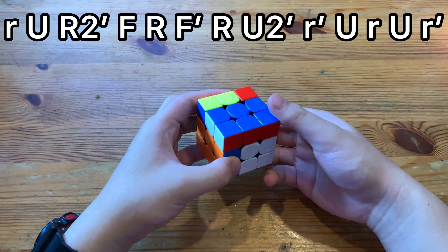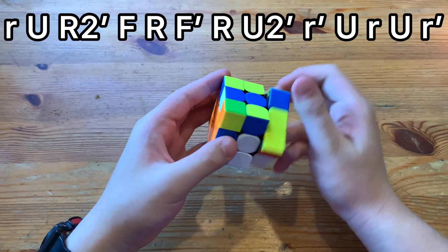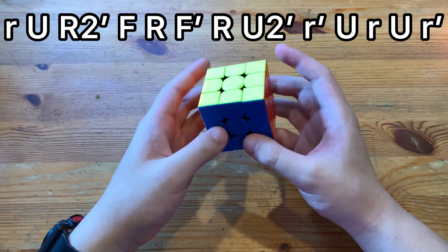The algorithm, you would do wider U, R2', F, R', R2', wider U, wider U, wider prime from this angle. It's actually quite fast.